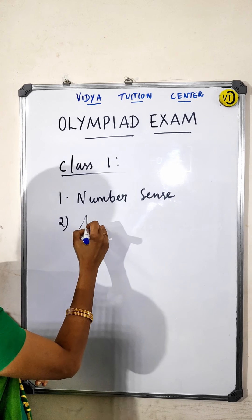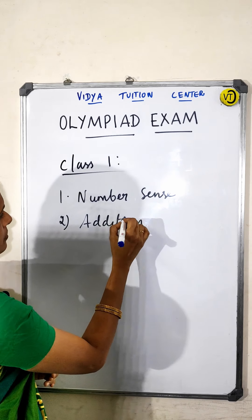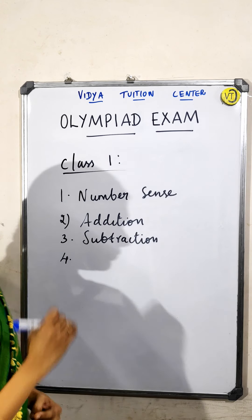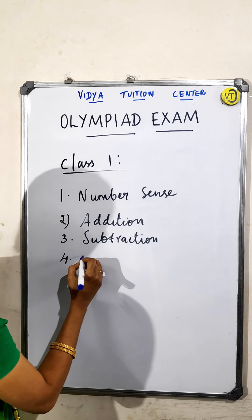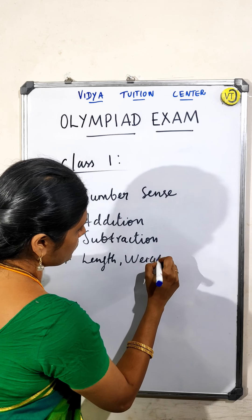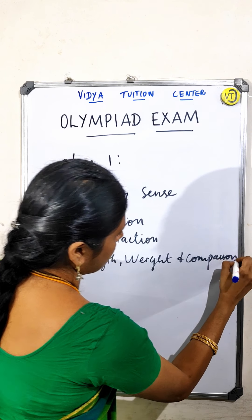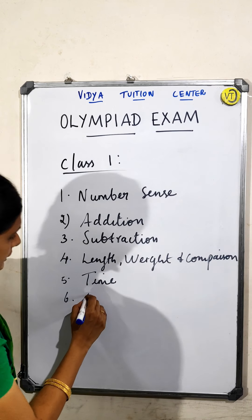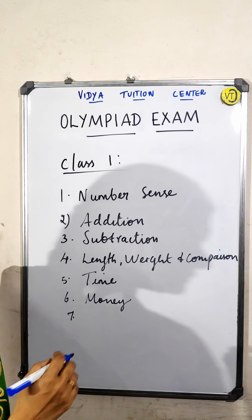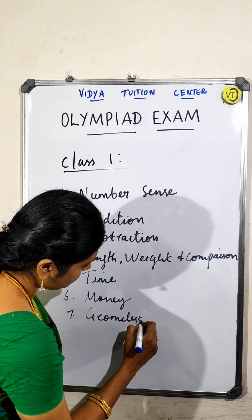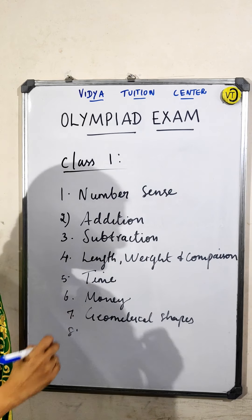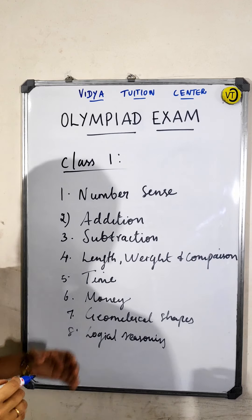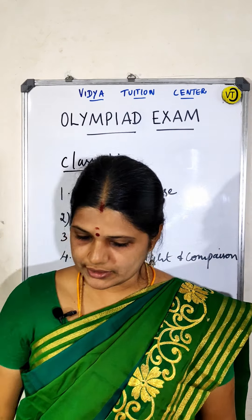The Class 1 Olympiad syllabus covers: Number Sense, Addition, Subtraction, Length, Weight and Comparison, Time, Money, Geometrical Shapes, and Logical Reasoning. These are all the topics covered in class 1.